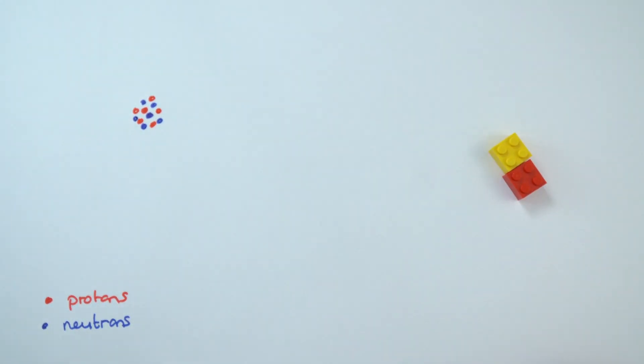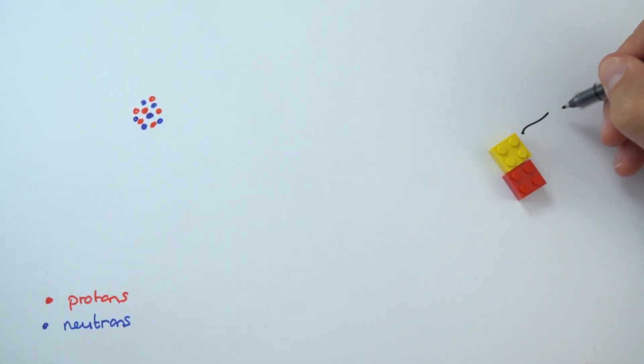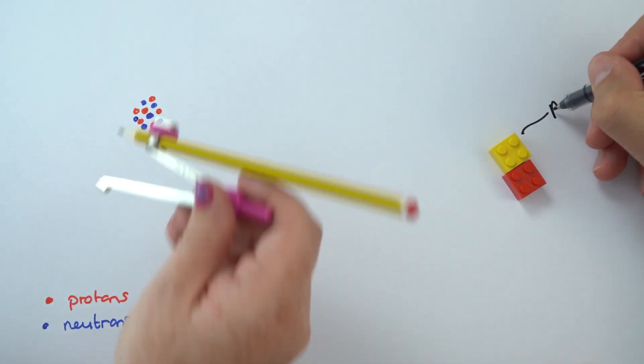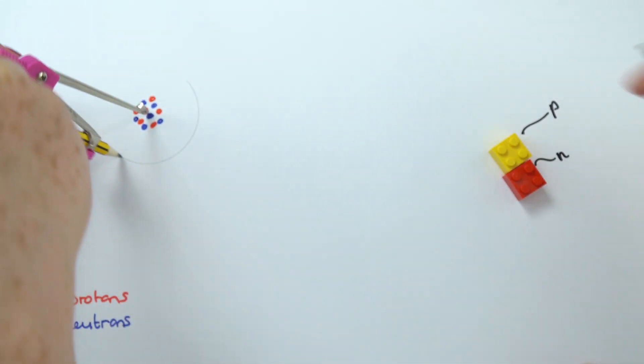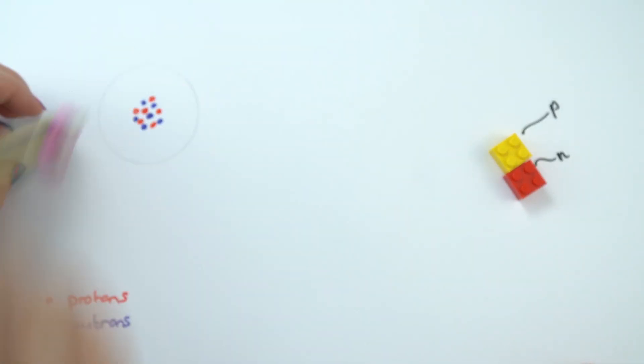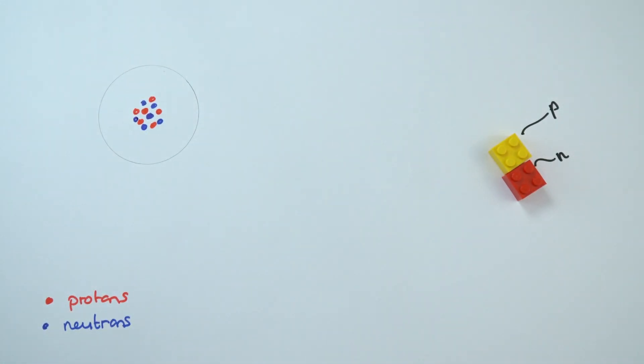Now the model that a lot of you might draw in your school labs is maybe just a load of circles. I'm going to be using, as I go into other videos, bits of Lego. And all I'm using is a yellow block of Lego to be a proton and I'm using a red block of Lego to be a neutron. So these are the two particles that we have inside the nucleus of an atom.